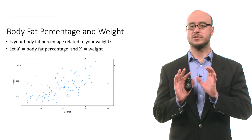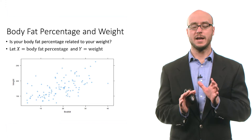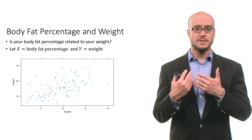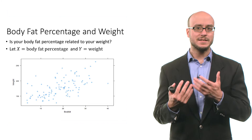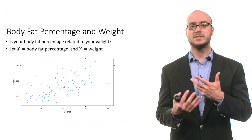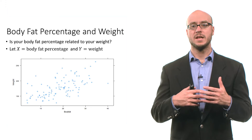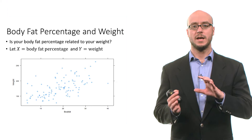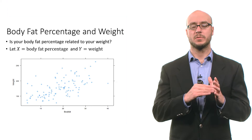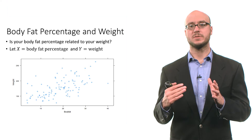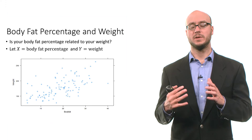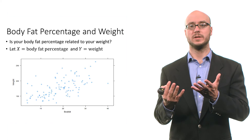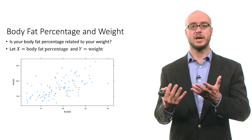First off, just looking at the scatter plot and the pattern of data, we can see that there's some kind of suggestive positive linear relationship, meaning as a person's body fat percentage increases, we'd expect their weight to increase in general.